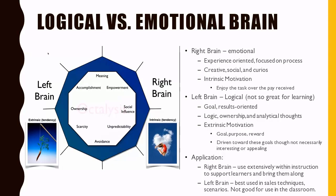Left brain is the logical side, which is not so great for learning — it's more goals-oriented and results-oriented. The extrinsic motivators are where we're trying to reach a goal, a reward, a purpose, and it may not be interesting or appealing — it's just what we have to do. If we can apply more right brain emotional responses within our courses, this is where faculty has a huge opportunity to achieve emotional connection with each student. We can be very successful incorporating right brain activities.